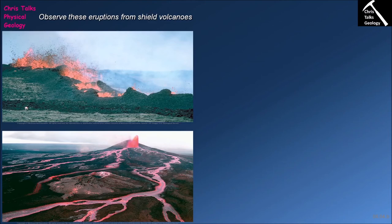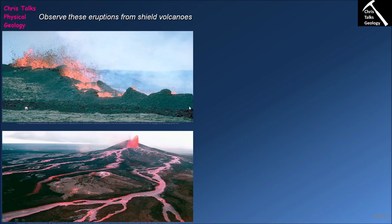Shield volcanoes have two primary eruption styles. The first is a fissure eruption — a linear crack on the surface through which very large amounts of lava are extruded, covering the surrounding area as lava flows. This fissure eruption is currently producing several lava fountains, throwing mafic lava into the air. The highly vesicular material forms large amounts of scoria along the fissure margin, while the majority of extruded lava flows away and cools to give us basalt.